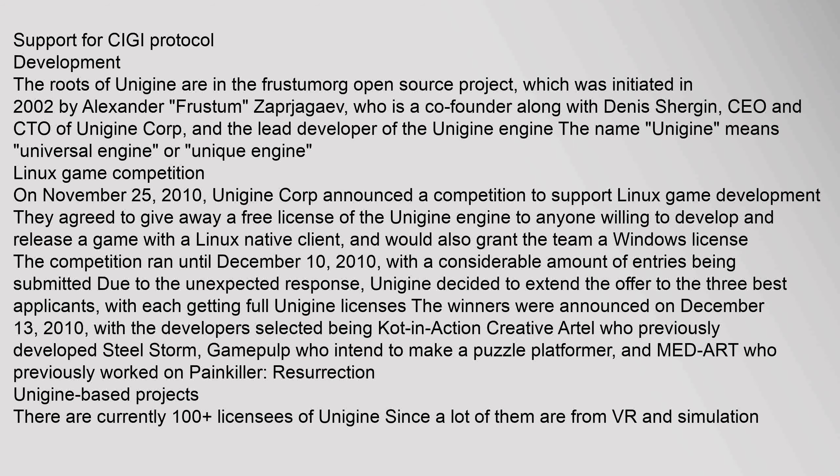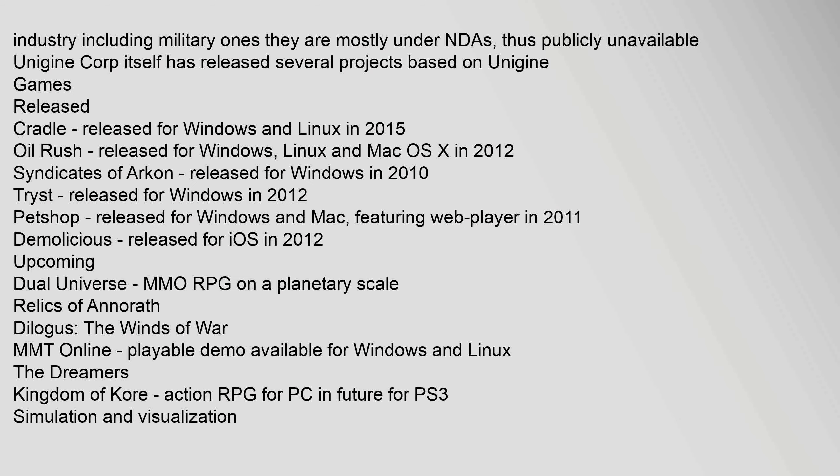On November 25, 2010, Unigine Corp announced a competition to support Linux game development. They agreed to give away a free license of the Unigine engine to anyone willing to develop and release a game with a Linux native client, and would also grant the team a Windows license. The competition ran until December 10, 2010. Due to an unexpected response, Unigine decided to extend the offer to the three best applicants, each getting full Unigine licenses. The winners were announced on December 13, 2010: Creative Artel, who previously developed Steel Storm; Gamepulp, who intended to make a puzzle platformer; and MedArt, who previously worked on Painkiller: Resurrection.